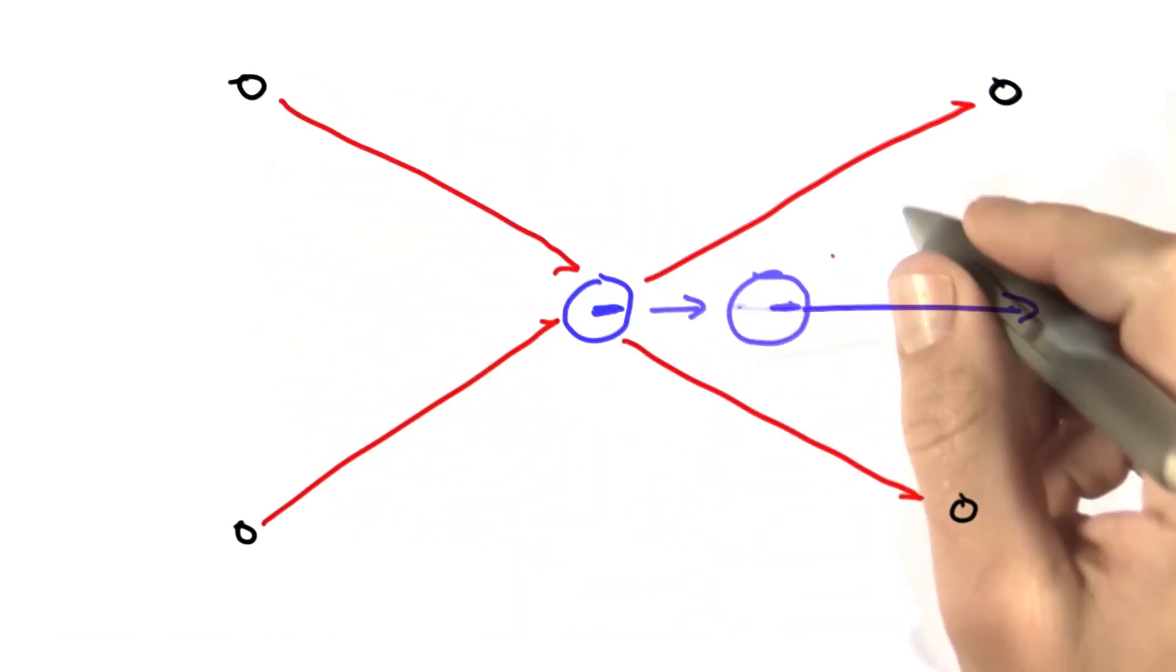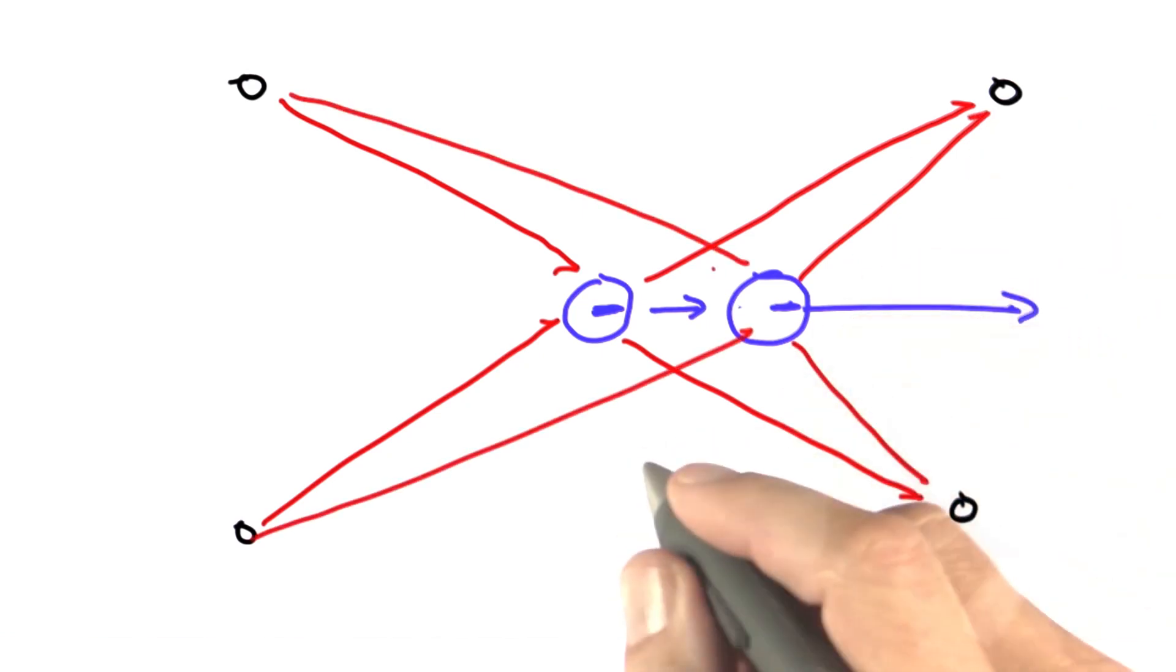But now this robot moves, and we get a new set of distances. And now orientation matters.